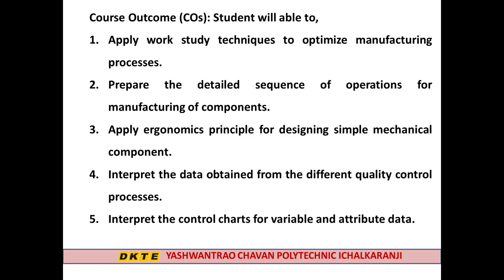The course outcomes for this subject are: First, Apply Work Study Techniques to Optimize Manufacturing Processes. Second, Prepare the Detailed Sequence of Operations for Manufacturing of Components. Third, Apply Ergonomics Principles for Designing Simple Mechanical Components. Fourth, Interpret the Data Obtained from Different Quality Control Processes. And the last course outcome is Interpret the Control Charts for Variable and Attribute Data.